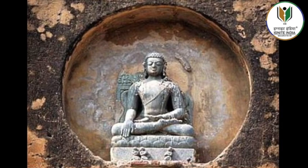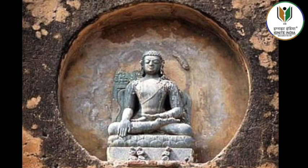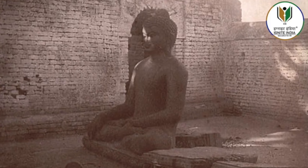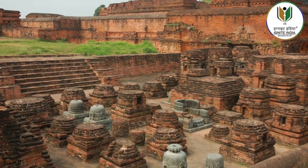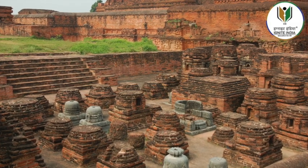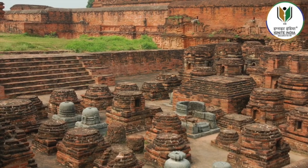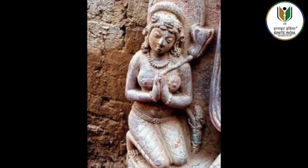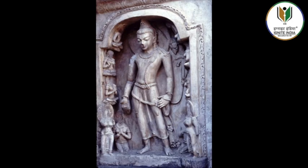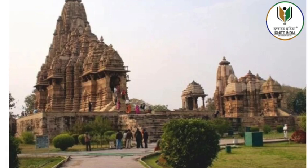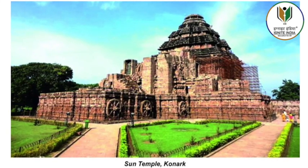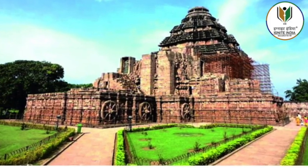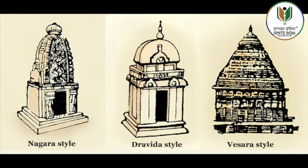The Nalanda sculptures initially depict Buddhist deities of the Mahayana pantheon such as standing Buddha, Bodhisattvas such as Manjushri Kumara, Avalokiteshvara seated on a lotus and Nagarjuna. During the late 11th and 12th centuries, when Nalanda emerged as an important Tantric centre, the repertoire came to be dominated by Vajrayana deities such as Vajrasharada, a form of Saraswati, Khasarpana Avalokiteshvara, etc.